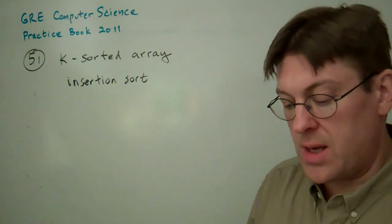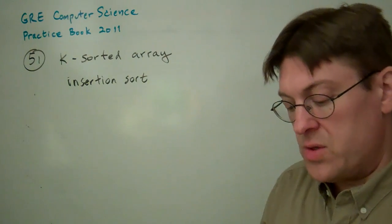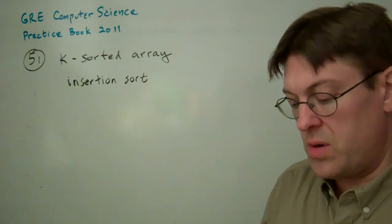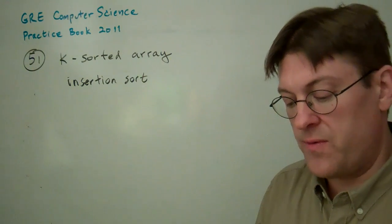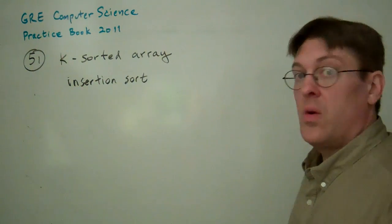Suppose that a is a k-sorted array of size n. If insertion sort is used to sort a, what's the order of growth of the number of comparisons performed by the sorting algorithm in the worst case?